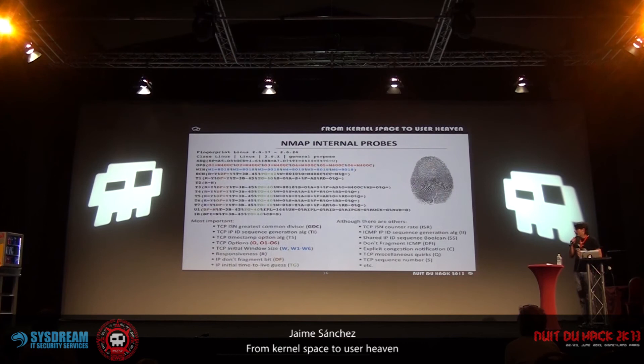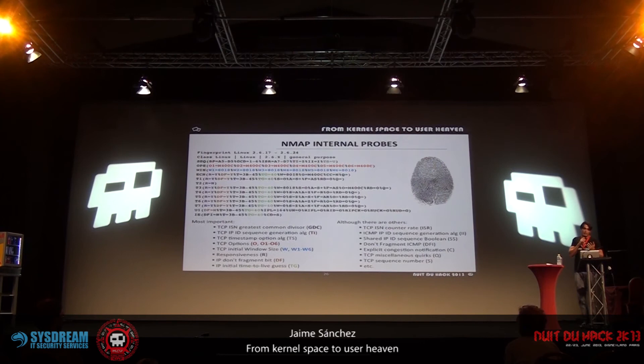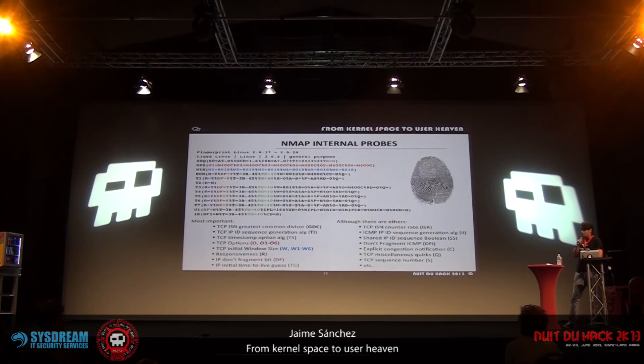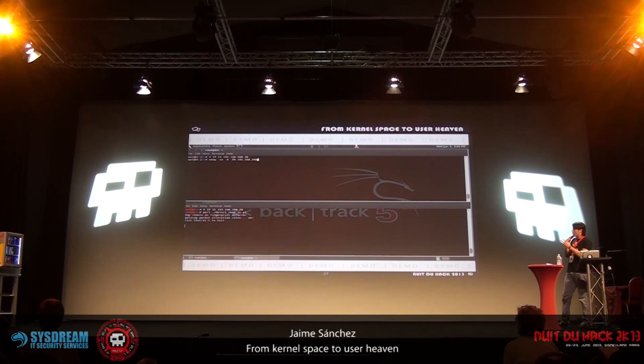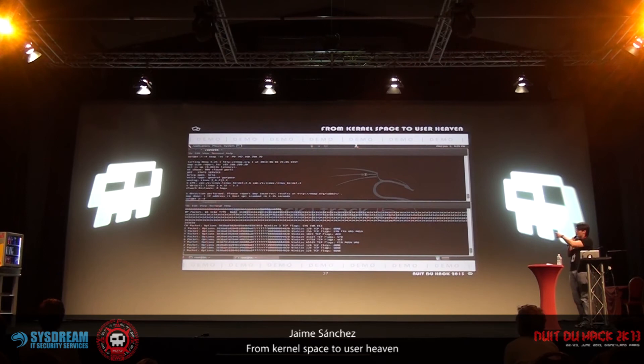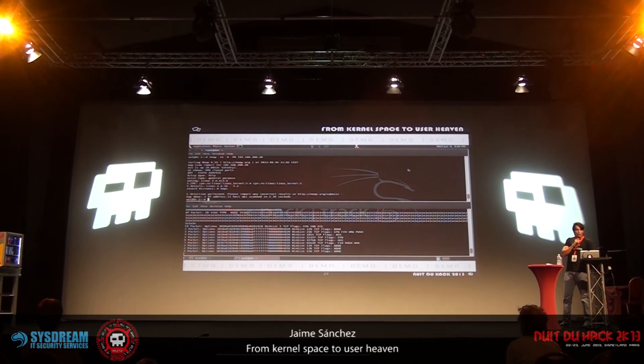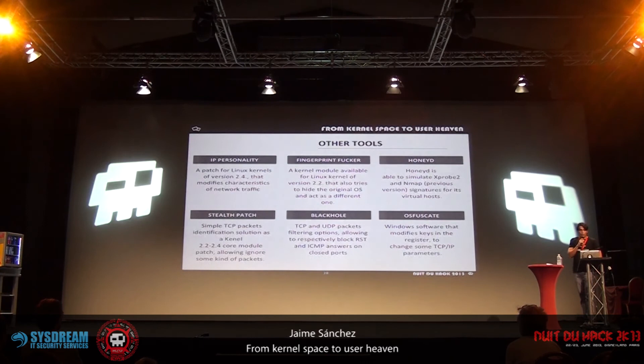With all this information, we are going to try to identify all the network packets Nmap is sending to us. We execute Nmap with options for fingerprinting only and a SYN scan. You can see we have detected all TCP packets — T2, T3, ICMP, and UDP. So maybe we can answer in a different way to try to fool it.